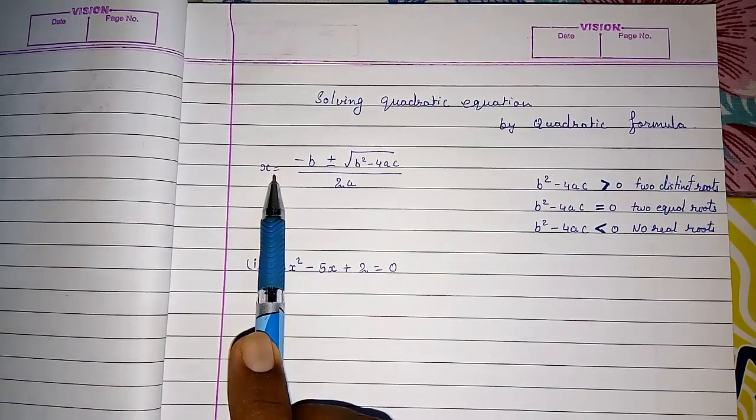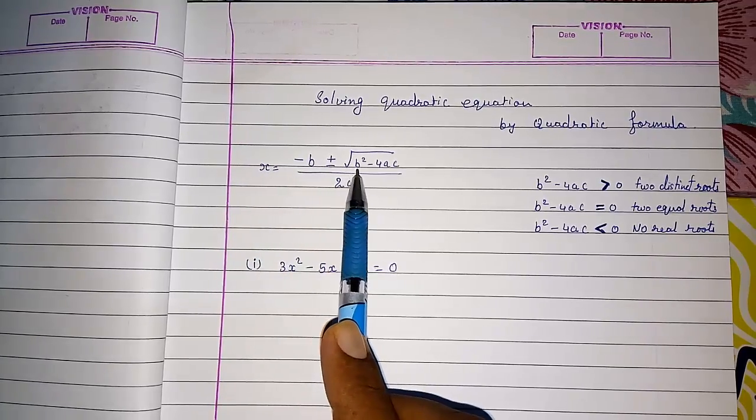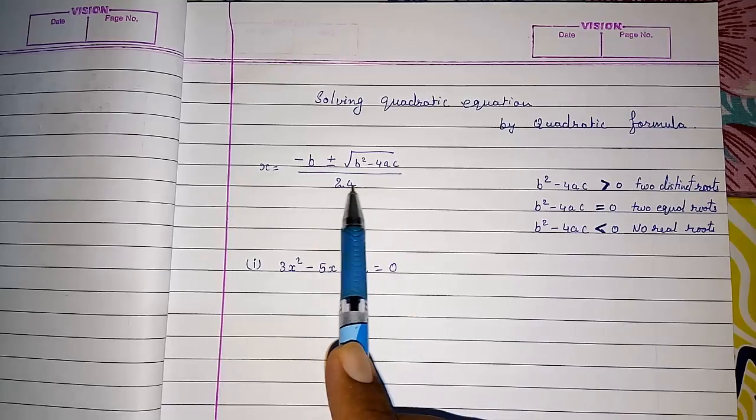This is the quadratic formula: x equals minus b plus or minus under root b square minus 4ac by 2a.